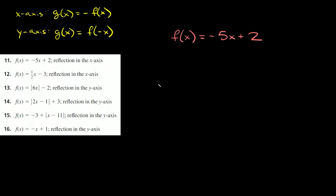Now we're going to cover reflecting in the x and y axes. Here are the two rules you need to know. If you have to reflect across the x-axis, the rule is g of x equals negative f of x — you just multiply your whole f of x function by a negative sign in the very front. If you have to reflect across the y-axis, then g of x equals f of negative x, meaning you turn all the positive x's in your function into negative x's.